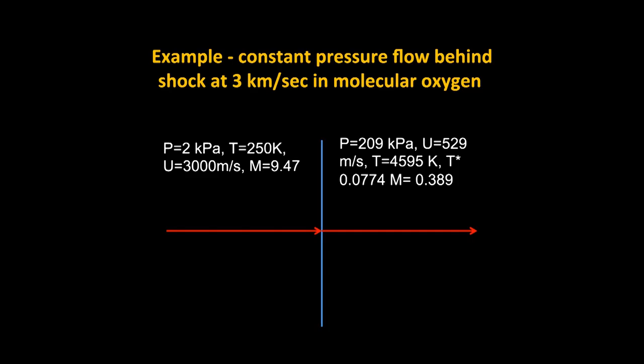On this slide we're looking at an example where we have a flow of molecular oxygen at 3 km per second, and we want to find out how much is it going to react behind the shock wave. Remember for oxygen, the characteristic temperature is about 59,500 K. So it's a very large number. So we do our calculations across the initial shock, where there's no dissociation taking place, it's just a perfect gas calculation. We have a temperature of 4595 K, or a non-dimensional temperature T star of 0.0774. And we'll now use this to try and look at how the flow is going to react in the post-shock conditions.